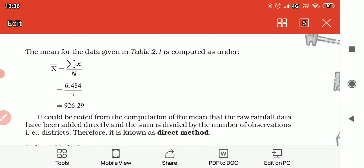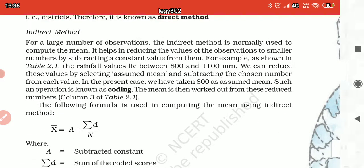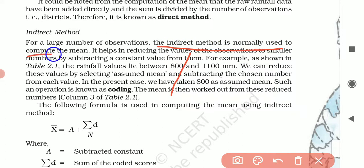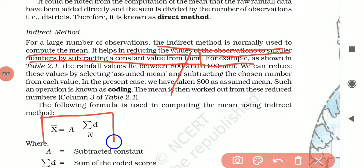Now let's move on to the indirect method. For a large number of observations, when we have a lot of data, the indirect method is normally used to compute the mean. It helps in reducing observation values to smaller numbers by subtracting a constant value from them. We assume a number that we will subtract. Let's see this formula: x bar equals A plus sigma d divided by n. Where A is the subtracted constant and d is deviation. This is coding.